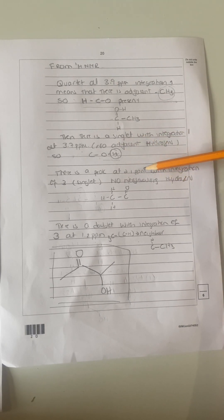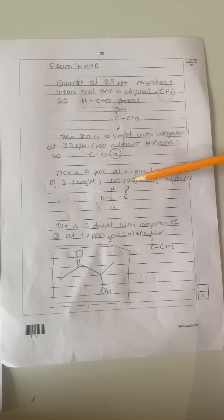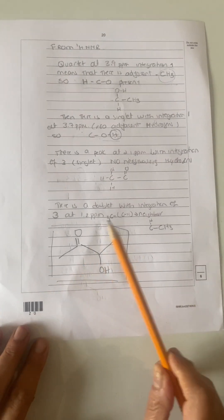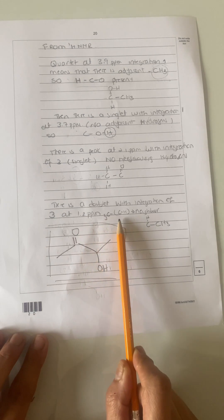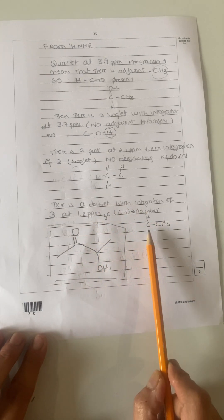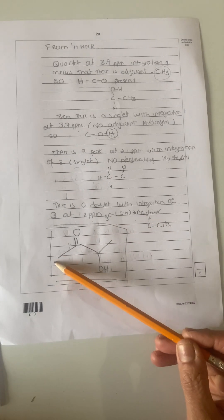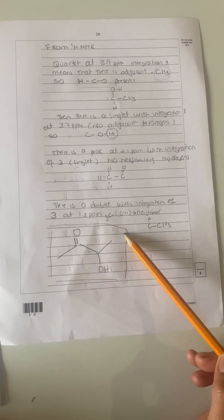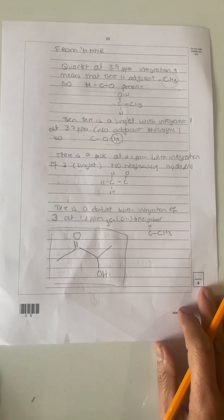There's a peak at 2.1 with integration of 3, which is a singlet with no neighboring hydrogens, so we think it's this bit here. And then there is a doublet with integration of 3 at 1.2 parts per million, which is this bit here. It's got a neighbor which is a CH present. From this information, you can work out that this is the compound that is present. That's compound X.